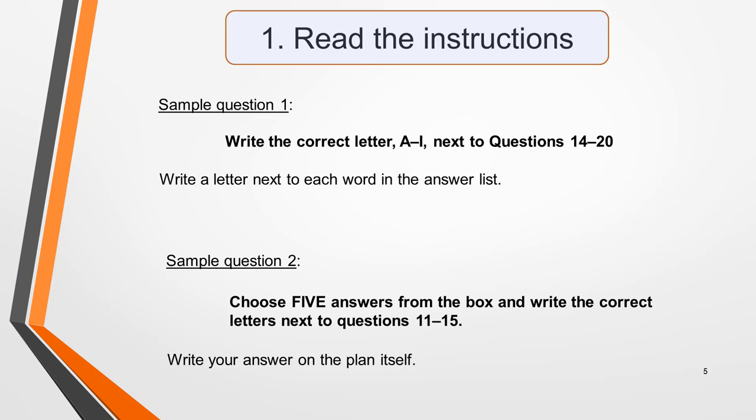You'll have a short time to prepare before the speakers begin talking. Use this time to familiarise yourself with the question and focus your mind on what you need to listen out for. First, read the instructions very carefully as the wording and what you have to do will vary in this type of question. For example, the instructions for the first sample question state: write the correct letter A to I next to questions 14 to 20, so you must write a letter next to each word in the answer list. In the second example they state: choose 5 answers from the box and write the correct letter next to questions 11 to 15. In this case, you will write the answer on the plan itself. It's essential to do exactly as stated.